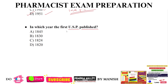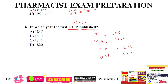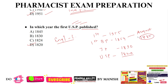In which year was the first USP published? We already discussed it. First Indian Pharmacopeia: 1955. First British Pharmacopeia: 1864. First Japanese Pharmacopeia: 1890. First USP, United States Pharmacopeia, was published in 1820 — option D. The first USP was published in English and Latin language. British Pharmacopeia is published every year in the month of August, and was made official in India from 1885. The term Pharmacopeia was used for the first time in 1580.